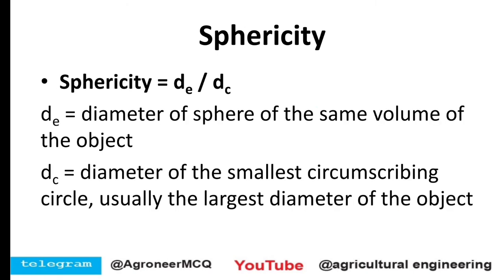One more formula is de by dc, where de is the diameter of a sphere of the same volume as the object. You find the volume of a particular grain or material, equate it to the volume of a sphere, and solve for de. Dc is the diameter of the smallest circumscribing circle, usually the largest diameter of the object.